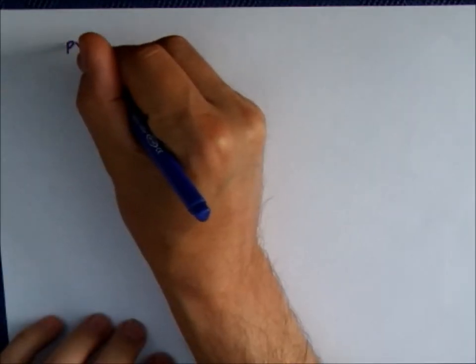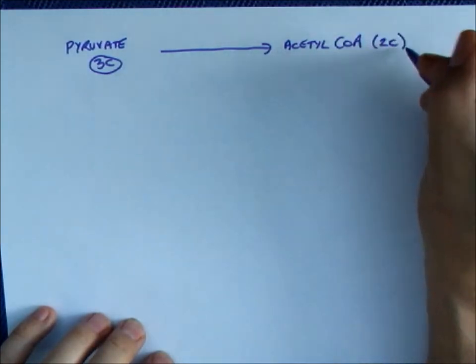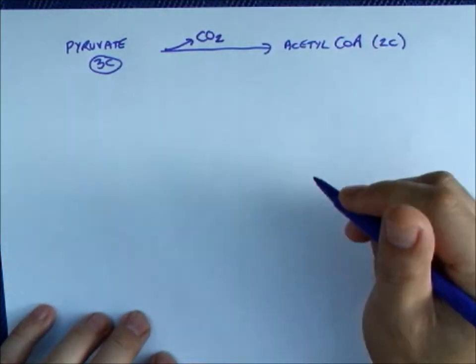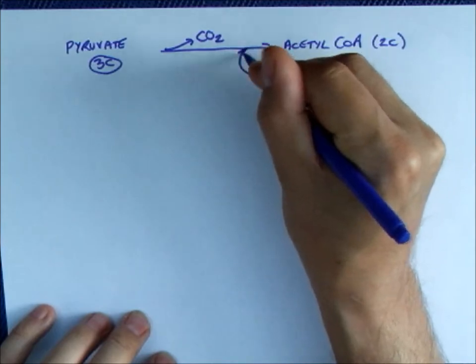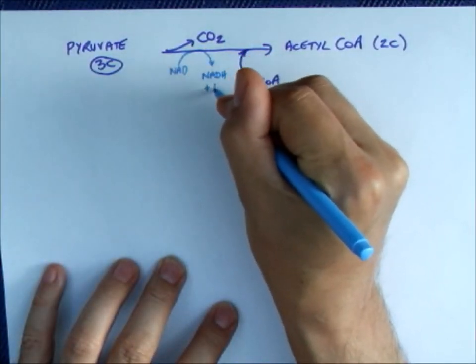Pyruvate, a 3-carbon sugar, is converted to acetyl-CoA, a 2-carbon sugar. This involves the loss of 1 carbon as carbon dioxide. A coenzyme A molecule is added and also in this process 1 molecule of NAD is reduced.